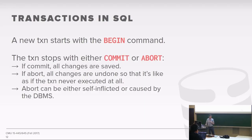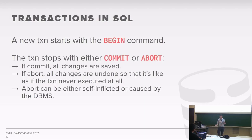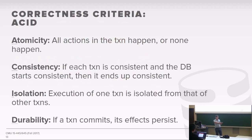If there's an ABORT command, all the changes get rolled back and it'll be as if the transaction never ran at all. An important thing to understand is that an abort can be self-inflicted or forced upon you by the database system. If I start a transaction, make changes, and call rollback — that's self-inflicted. But it may also be that the database system forces an abort because your transaction would interfere with another transaction and violate the guarantees it needs to ensure. You'll see this in the third project when you implement two-phase locking.